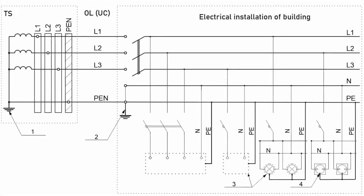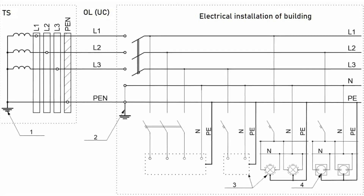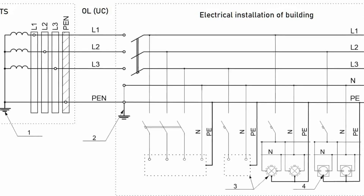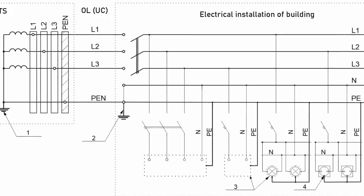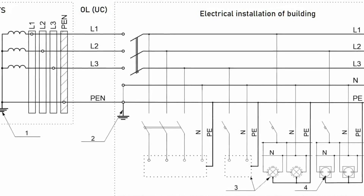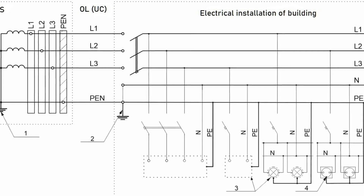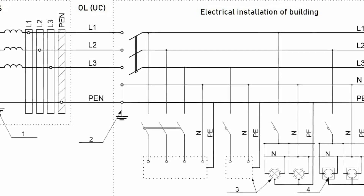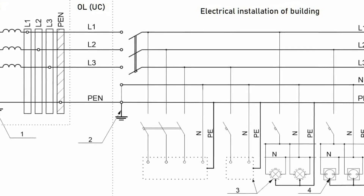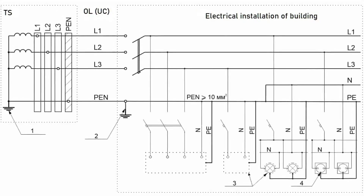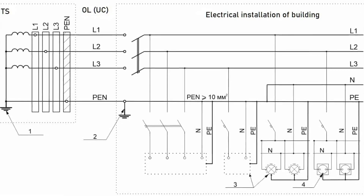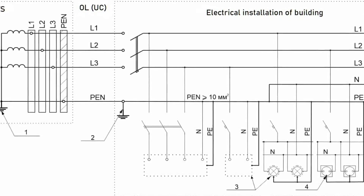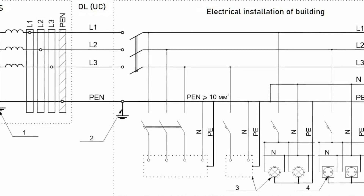With the TN-C-S type of system earthing, the PEN conductor is always separated into a protective conductor and a neutral conductor at some point in the electrical installation of a building. This separation can be affected at the origin of the electrical installation — at the input terminal or at the protective bus bar of the switchgear (figure one). This should be done in the electrical installations of residential and public buildings, commercial establishments, and medical facilities. The PEN conductor can also be separated at the input terminal or protective bus bar of another switchgear connected to the main switchgear via a distribution circuit that has the PEN conductor as part of its conductors (figure two).